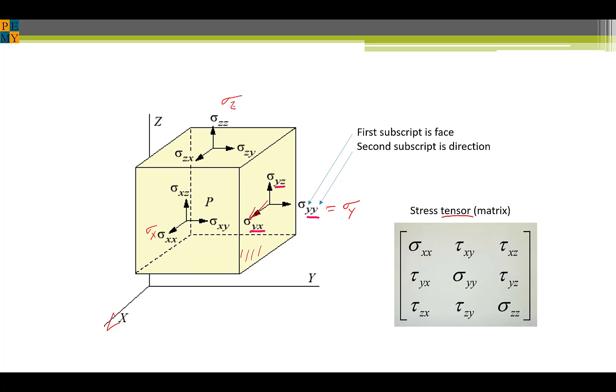In most cases for shear stress, we use tau instead of sigma, but we keep the two subscripts. I'll show you later that the order of the two subscripts for each shear stress does not matter. That means that sigma xy is equal to sigma yx. This is because shear stresses on orthogonal planes are always equal.